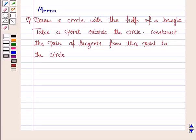Hello and welcome to the session. Let's work out the following question. It says, draw a circle with the help of a bangle. Take a point outside the circle. Construct the pair of tangents from this point to the circle.